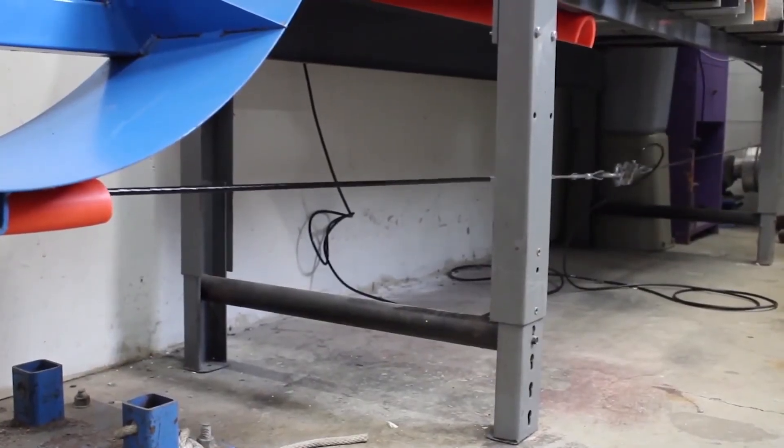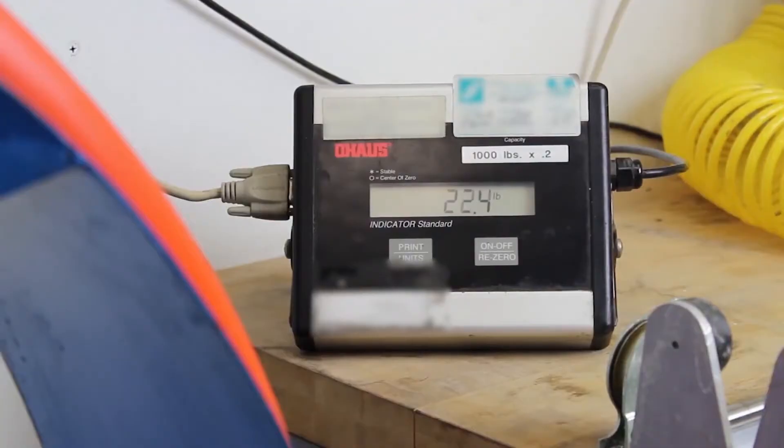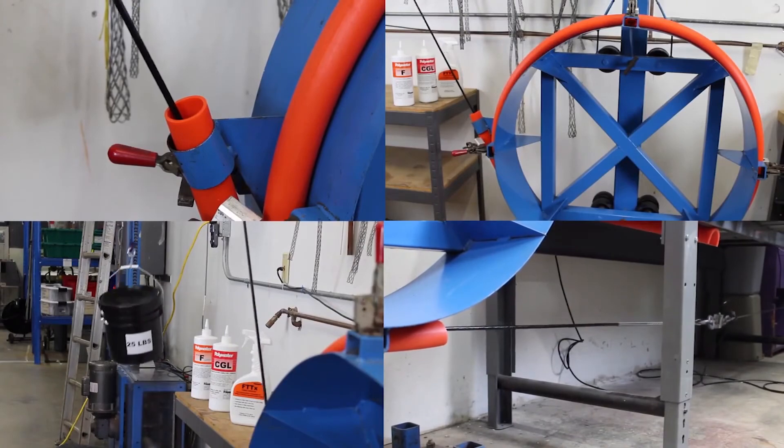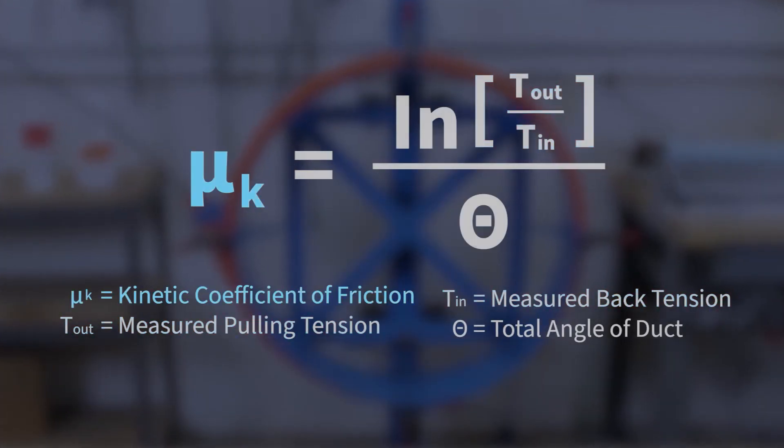A fixed back tension is attached to a pulley. The cable is connected to a load cell and pulled out at a set speed. Dynamic tension values are recorded as the cable moves through the conduit. Pulling tension is used to calculate the friction coefficient using a standard formula.